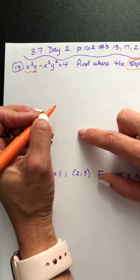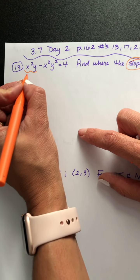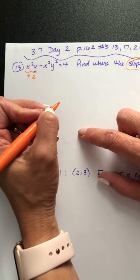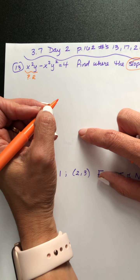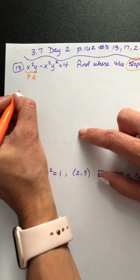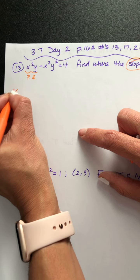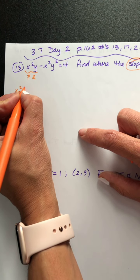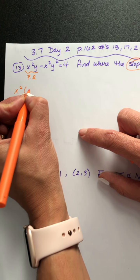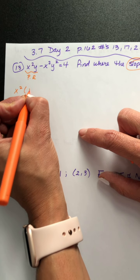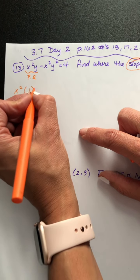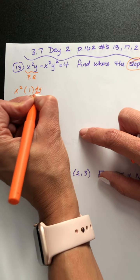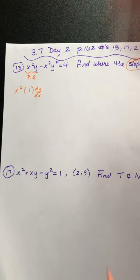Looking at the first term, I have x squared times y. Since I have two quantities here, I'm going to have to use product rule. So that means I need the first term, x squared, times the derivative of the second. The derivative of y is 1, and because it was a y, dy dx.